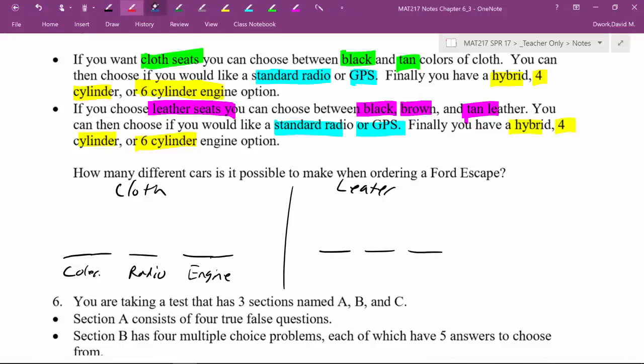Now, how many choices do I have for each? Well, with the cloth seats, I only had two choices of color, then I had two choices of radio, and three choices for the engine. And that was not exactly the same for the leather seats. For the leather seats, I had three choices in color, two radio, three engine. And so what we could do is we've created two separate little problems. We could figure out, okay, if I do a cloth car, I have two times two is four, times three is twelve.